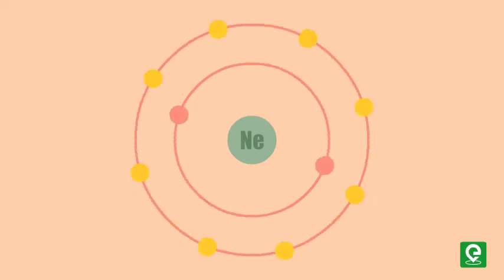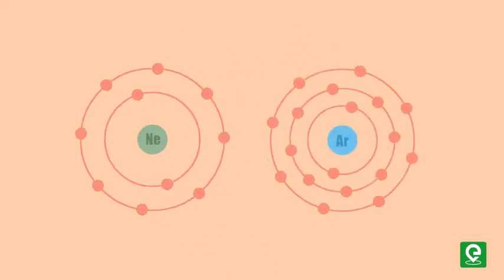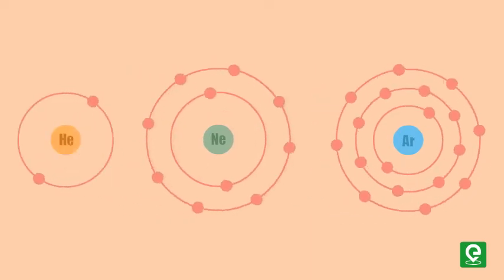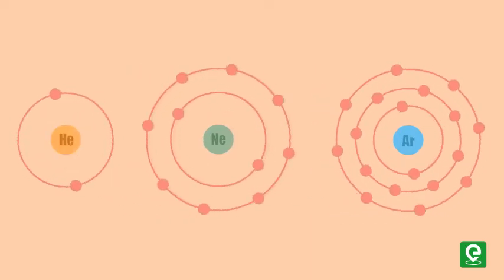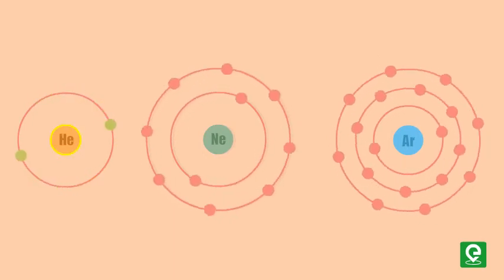Neon does not need to lose or gain electrons like sodium or chlorine. Similarly, all other inert elements have eight electrons in the outermost orbit. This is called octet configuration. Helium is also an inert gas, but its electronic configuration is 1s2.